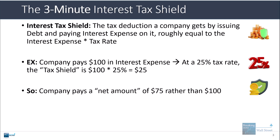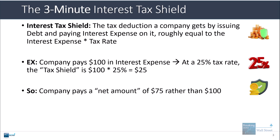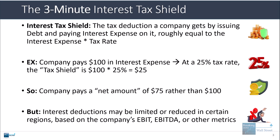The company pays a net amount of $75 rather than $100, so the fact that interest expense is tax deductible saves them about $25 — that's what is meant by the interest tax shield. In many cases, interest deductions may be limited or reduced in certain regions such as the U.S., based on the company's EBIT, EBITDA, or other metrics.